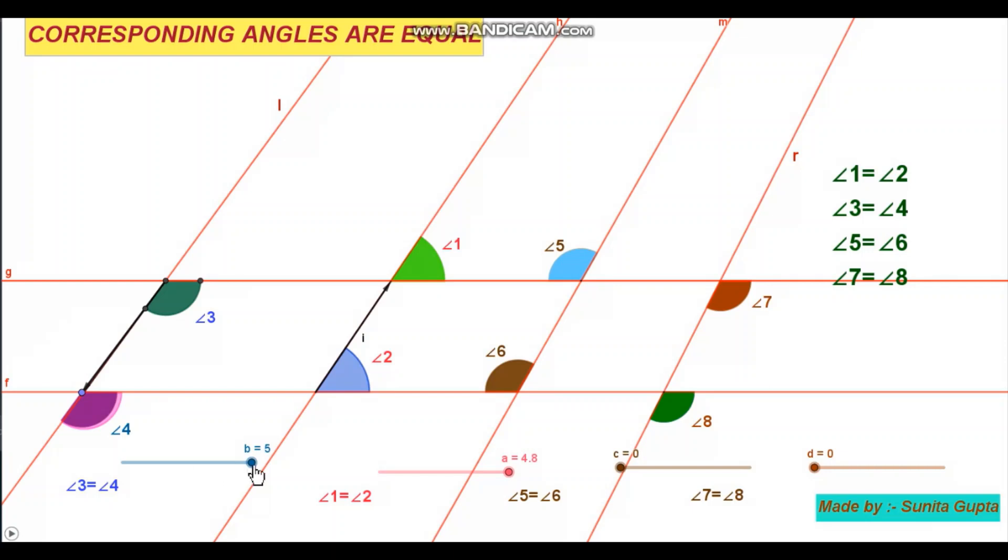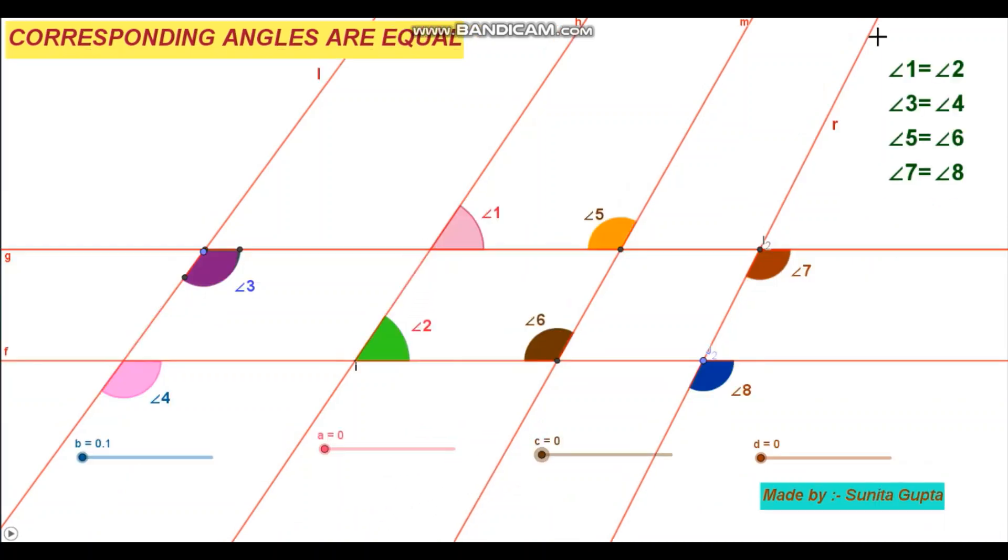By animation, we observe that angle 3 is equal to angle 4, angle 1 is equal to angle 2, and angle 5 is equal to angle 6.